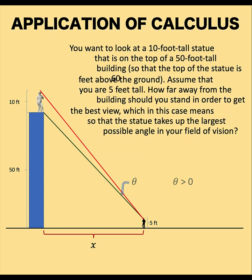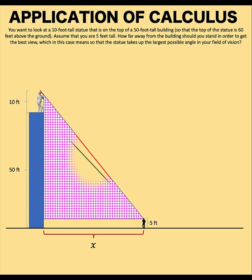Now, let's solve this problem together. Let's begin by looking at this triangle. Let's assume that the building is perpendicular to the ground, and therefore we have here a right triangle. The width of the triangle is x, and the height of this triangle is 60 minus your height, which is 5, and therefore the height is 55 feet.